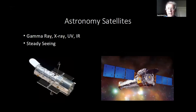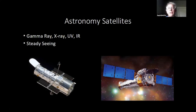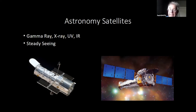Once satellites got into space, we could detect gamma rays, x-rays, ultraviolet, and infrared — the electromagnetic spectrum we can't see from the ground. Even in visible light, once you got above the distorting atmosphere, you had steady seeing and much clearer images. The telescope optics could reach their maximum ability to resolve objects. We all know the Hubble Space Telescope — the most famous satellite ever launched by the United States — and the wonderful images it has returned.